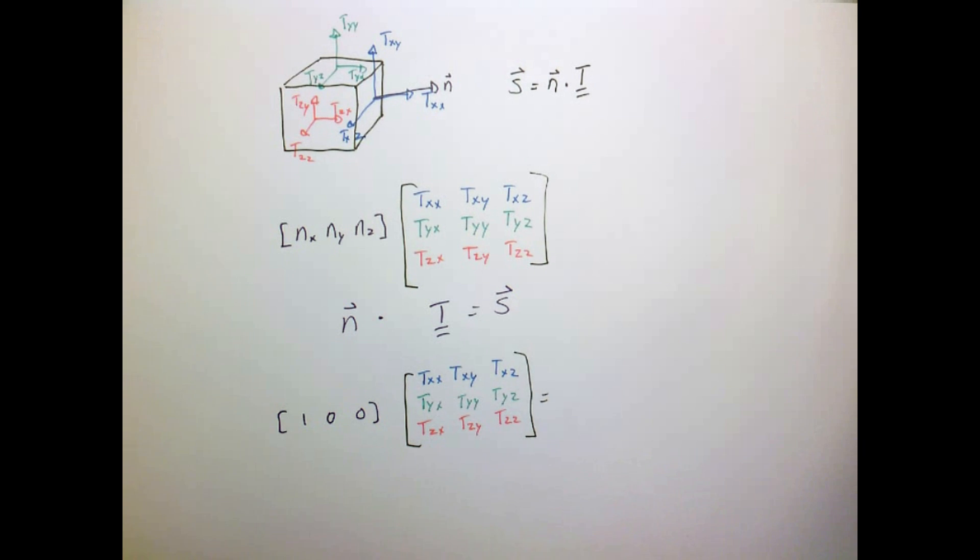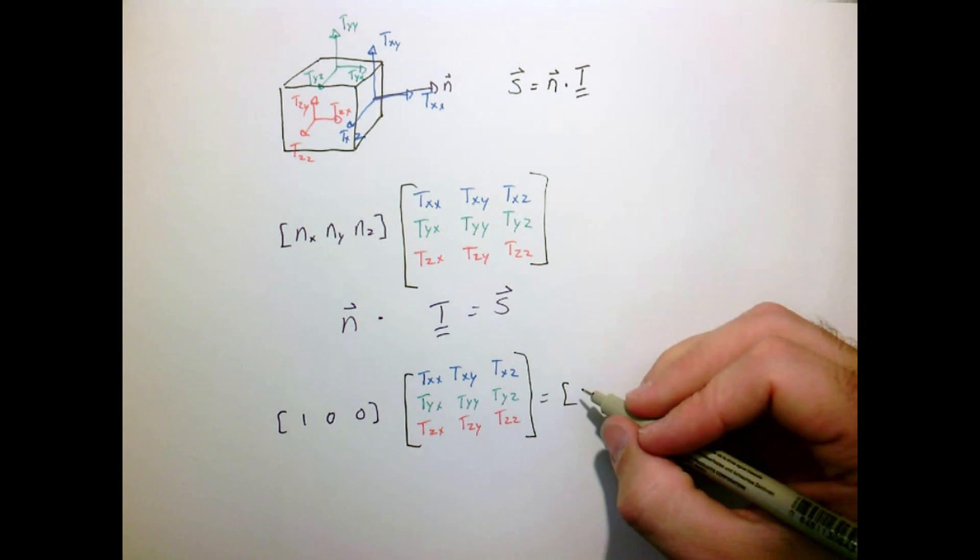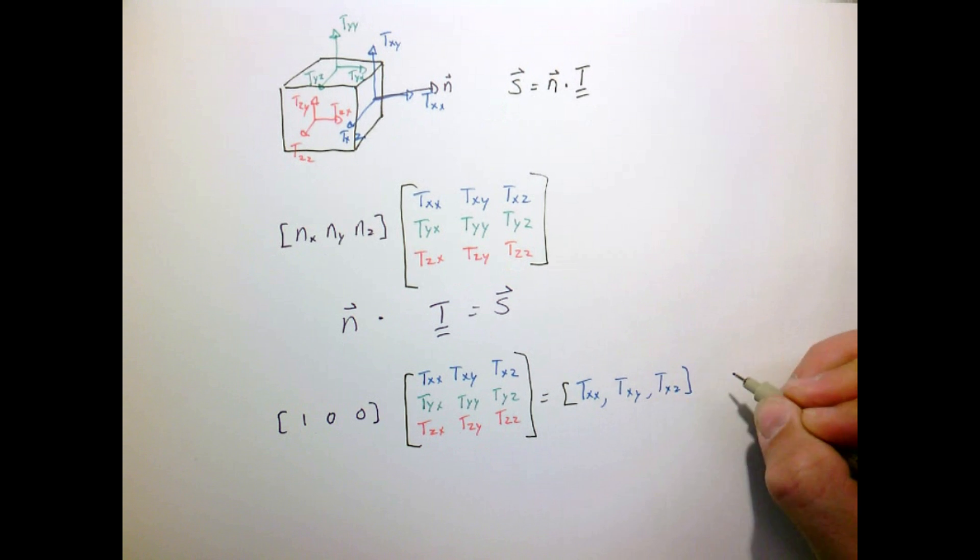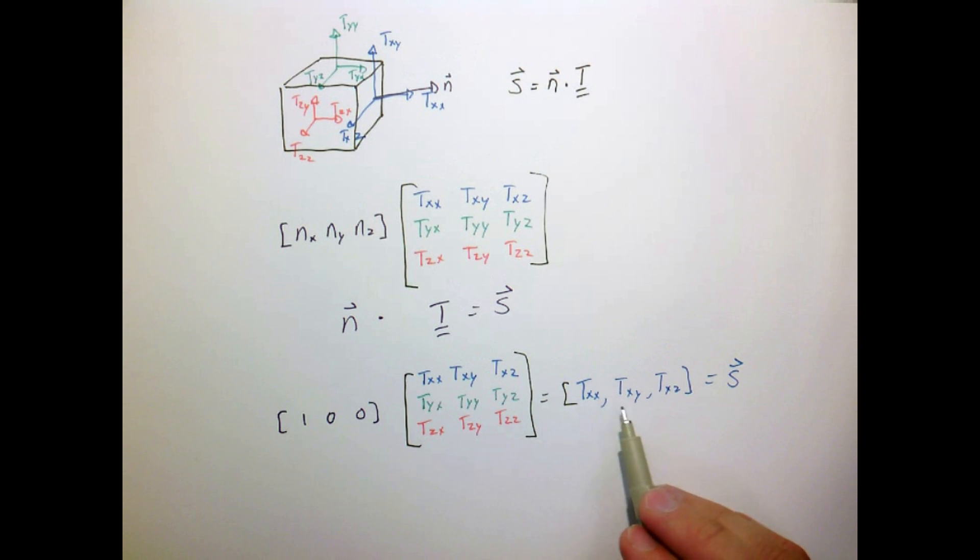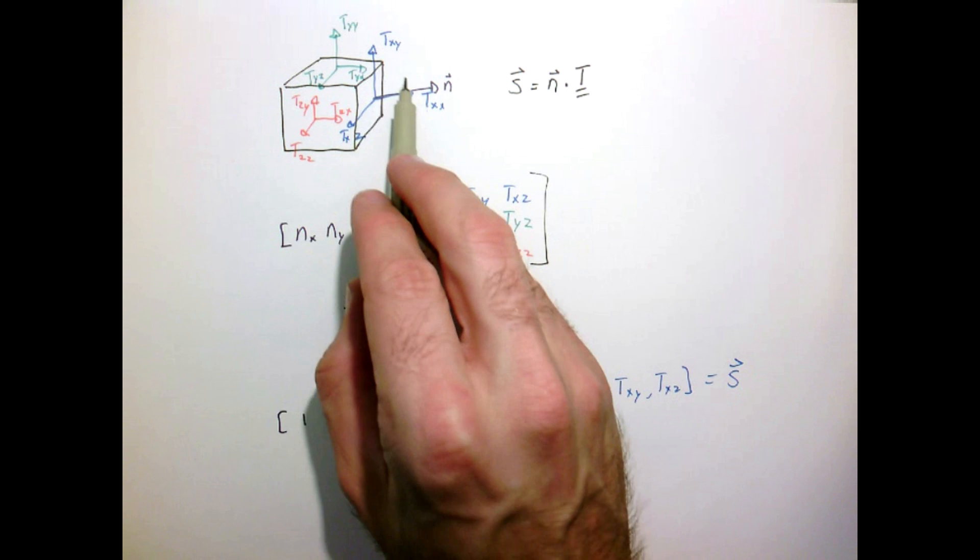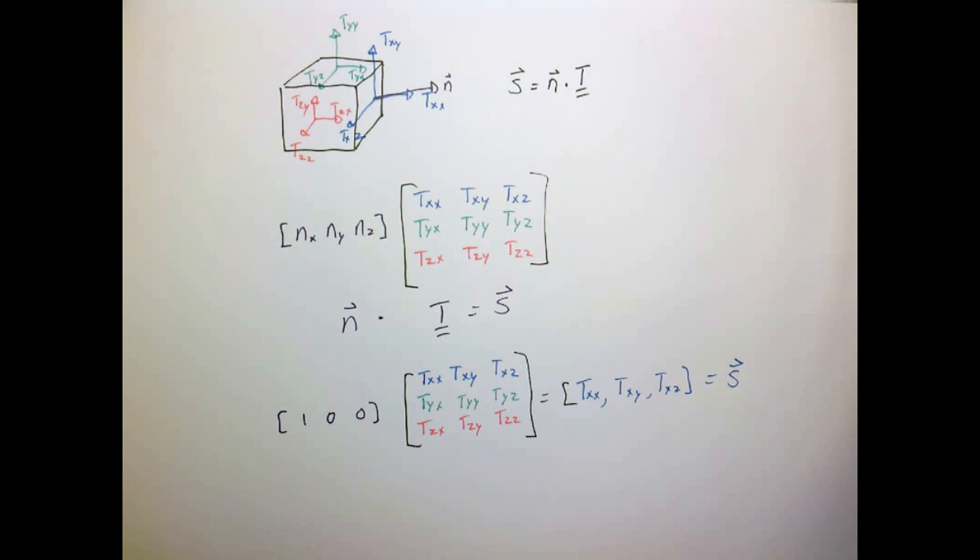And if I do the vector matrix multiply, I simply get a vector which has components, τ_xx, τ_xy, and τ_xz components, which we just extract the values of this from the stress tensor off that face. So it's kind of a trivial example, but we see we get the right result.